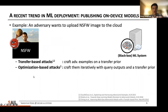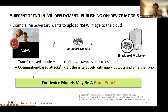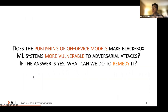However, what if we make this challenge much easier? A recent trend in machine learning deployment is to publish smaller models to devices, and this brings many benefits, such as improving service continuity when users don't have internet access and reducing operational costs for service providers. But at the same time, such models are easy to reverse engineer and can be used as a good prior for the attacker. This will become an important concern for machine learning sustainability, as Professor McDonnell pointed out in this year's CCS keynote talk. So we ask: does publishing on-device models make black-box machine learning systems more vulnerable to adversarial attacks, and if yes, what can we do to remedy this?